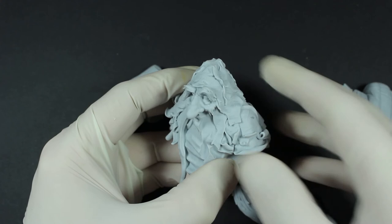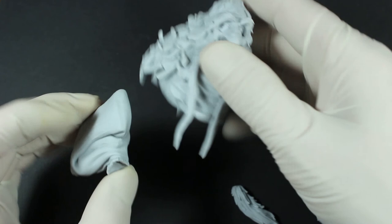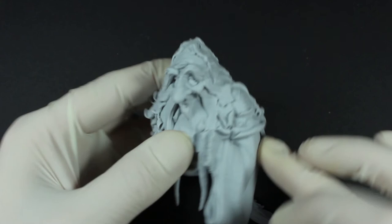Once you've washed your miniature in warm soapy water, have a look to see if there's any mold lines on the model and go around and test fit a few things.